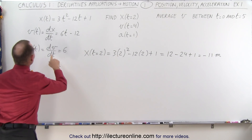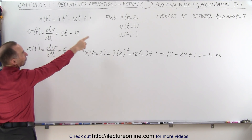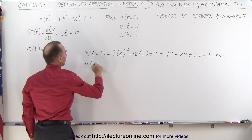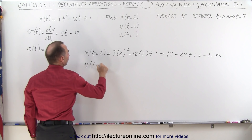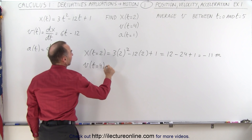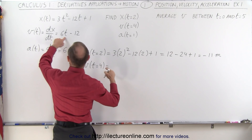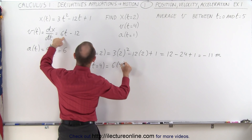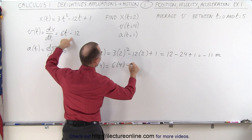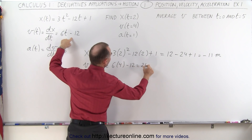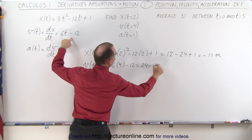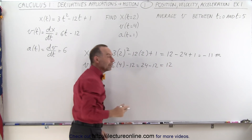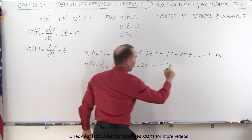Next, we're going to evaluate the velocity equation for time equals 4. Velocity when time equals 4 is equal to 6 times 4 minus 12, which is 24 minus 12, which is a positive 12, and that would be in units of meters per second.